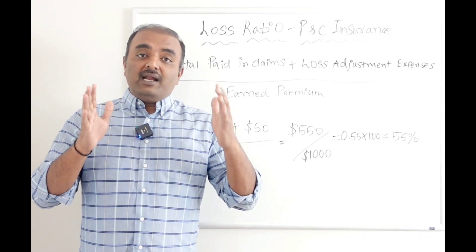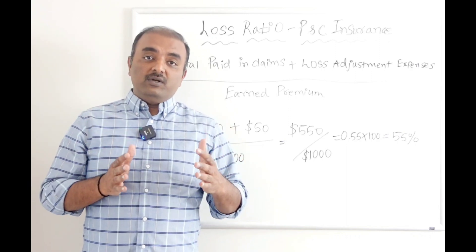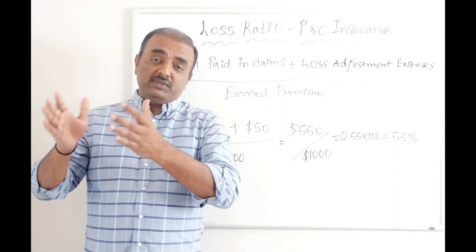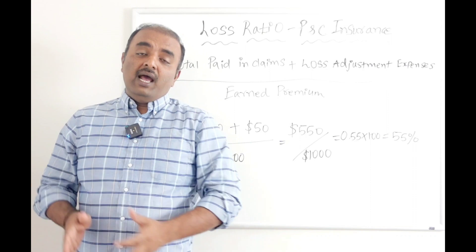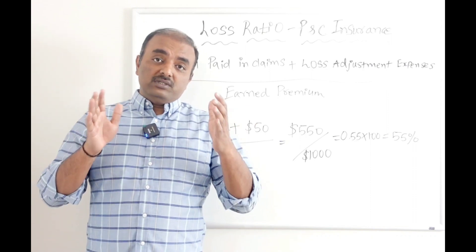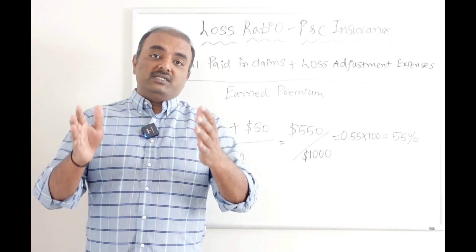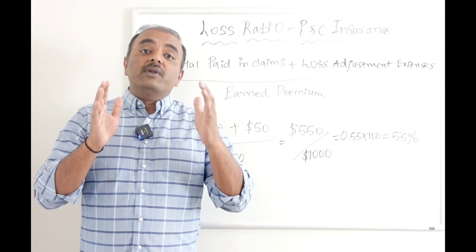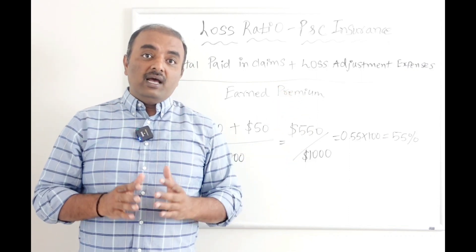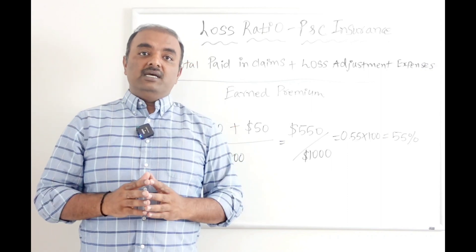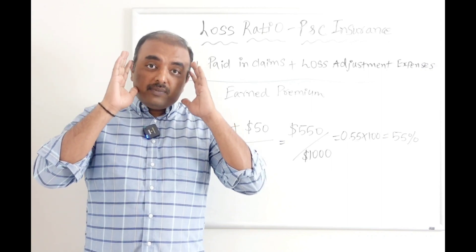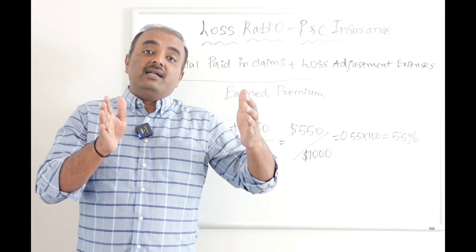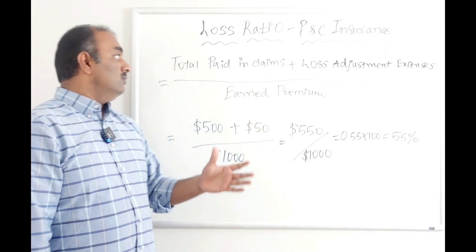So the earned premium is calculated in such a way that in our example, if I have a policy which is effective from January 1st, 2022 to December 31st, 2022, and the overall premium is $1,000, as of June 1st when I cross my six months of term, we say earned premium is $500 because I have given required coverage. Whatever the term that I have given coverage for, that premium alone we consider as earned premium.